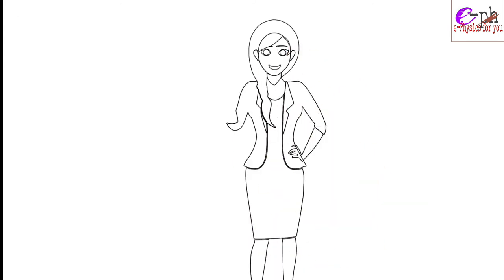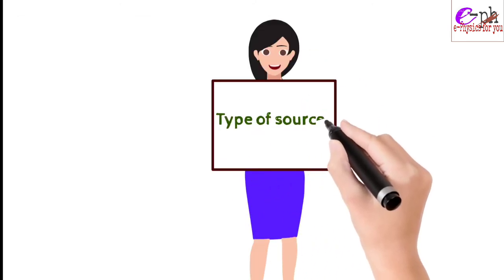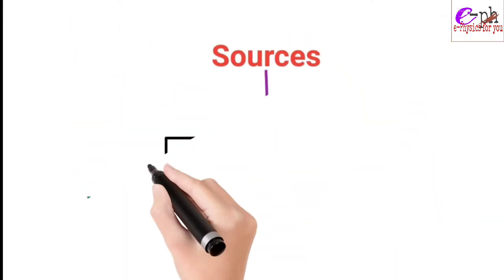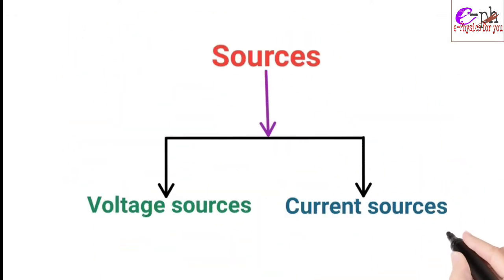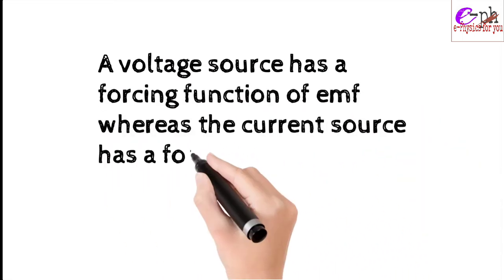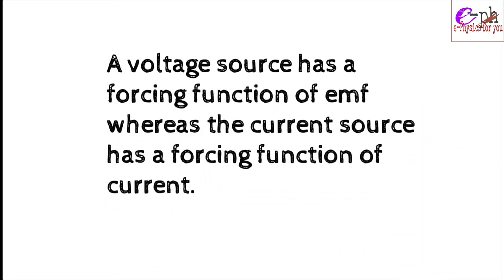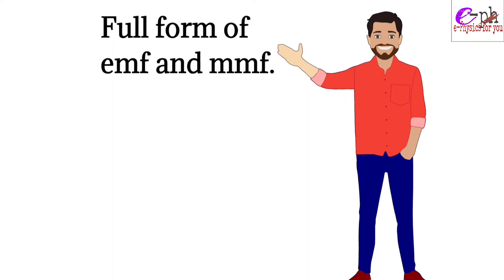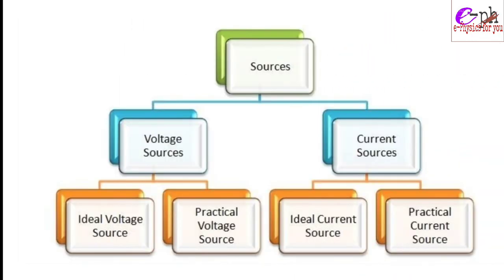We will now discuss how many types of sources there are in an electrical network. There are two types of sources: one is a voltage source and the other is a current source. A voltage source has a forcing function of EMF, whereas the current source has a forcing function of current I.